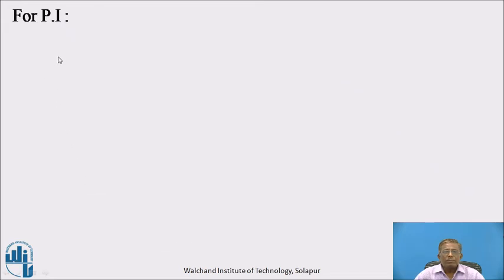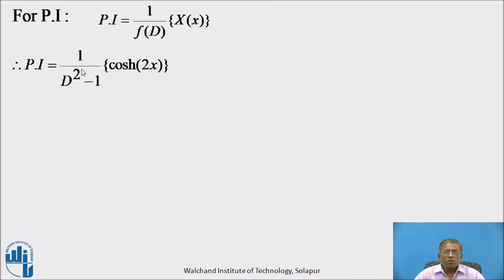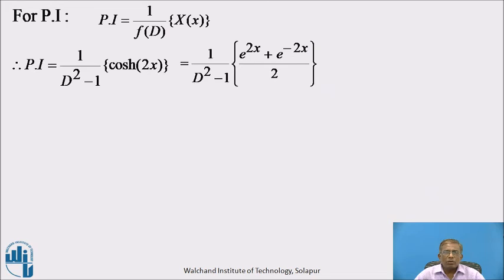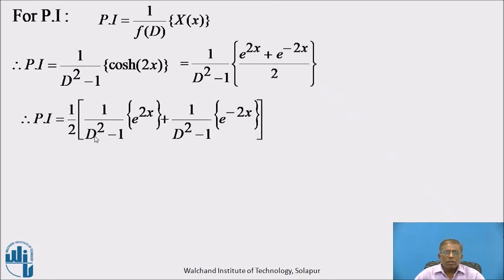For PI, the formula is PI = 1/f(D) operating on X(x). Therefore, PI = 1/(D² − 1) operating on cosh(2x). We express cosh(2x) in exponential form: cosh(2x) = (e^(2x) + e^(−2x))/2. Therefore, PI = 1/(D² − 1) · (e^(2x) + e^(−2x))/2.